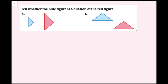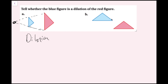For example one, tell whether the blue figure is a dilation of the red figure. For part a, it looks like the same shape, and if I draw a line here it looks like there could be a possible center of dilation, so yes this is a dilation. For part b, these two figures look like the same shape but not a different size — this looks more like a translation because the size isn't changing, so this is not a dilation.